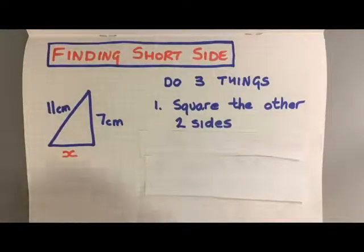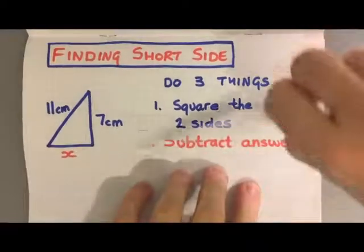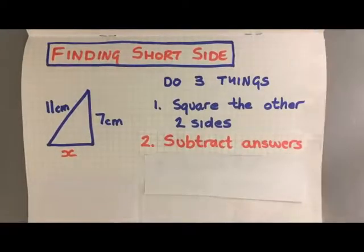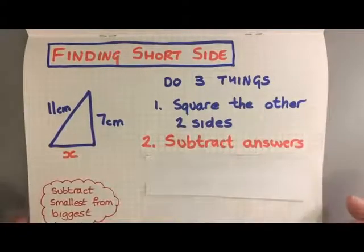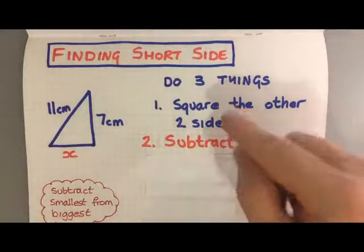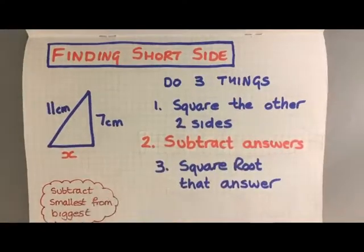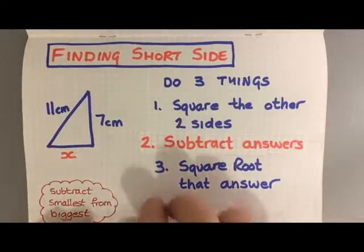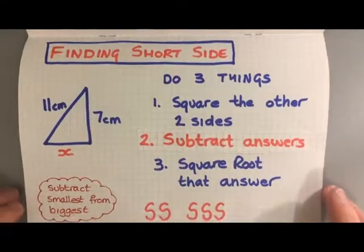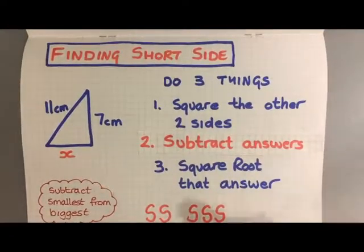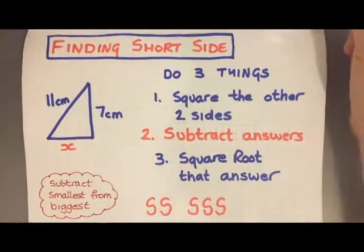Square the other two sides. Okay, so when you've squared the other two sides, you've got to subtract the answers. But you've got to be careful, you've always got to subtract the smallest from the biggest. Square them, subtract them, square root the answer. I remember that by SSS. All the S's: you've been asked to find the short side, the short side is all S's. Square, subtract, square root is all S's.